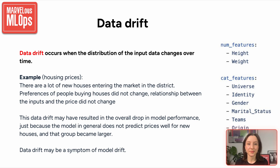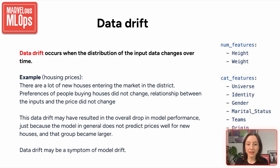Let's revisit data drift. Data drift happens when the distribution of the input data shifts over time, even if the relationship between inputs and outputs stays the same. Take the housing price prediction example: suppose a lot of new houses enter the market in a certain district. People's preferences haven't changed, and the relationship between features and price remains stable. But because the model hasn't seen enough examples of these new houses, its performance drops — not because the logic changed, but because the data shifted. So in this case, data drift is the root cause of declining accuracy.